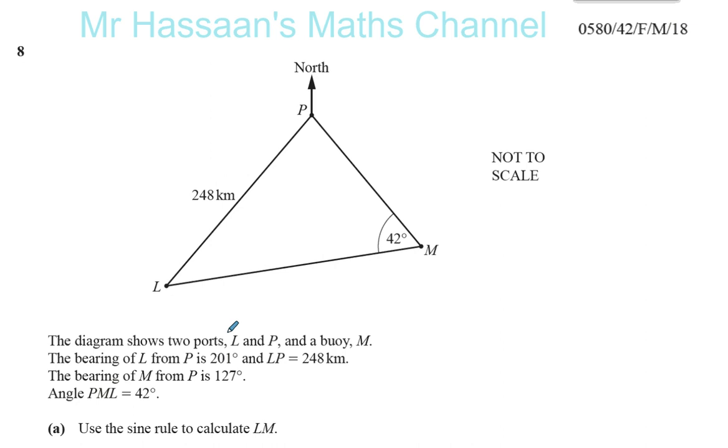The bearing of L from P is 201 degrees. The bearing of L from P, what does that mean? Well, that means you are at P, and the bearing of L from P tells you how to face towards L if you are at P. So you've got to first face north, and then you've got to turn clockwise until you're facing L.